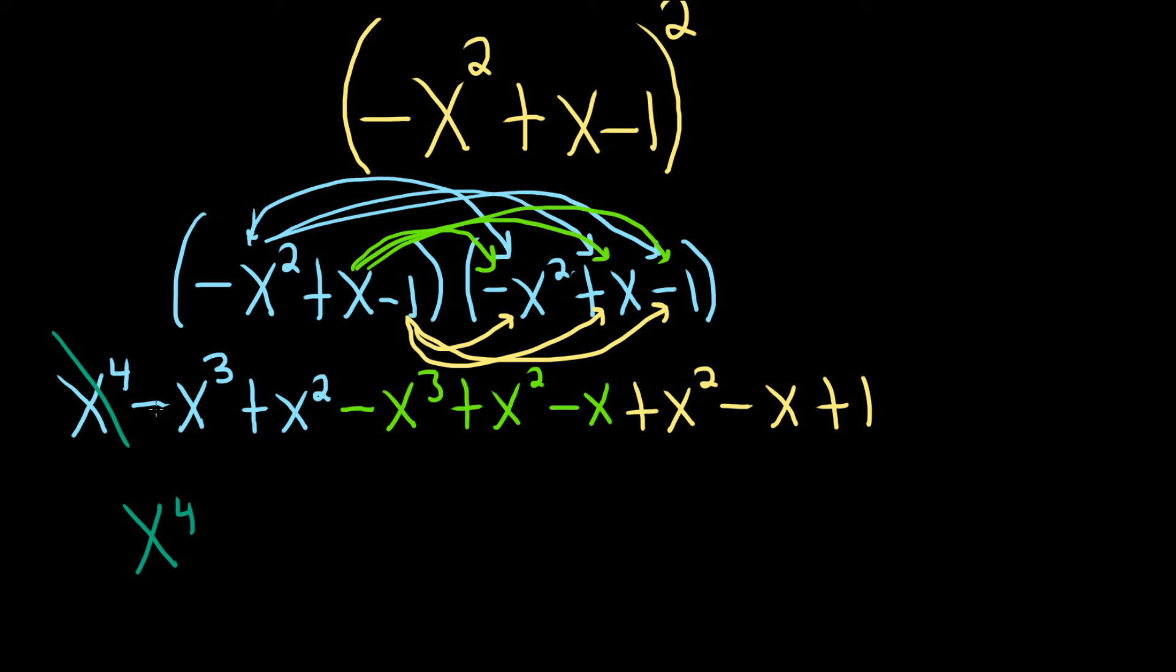So I'm going to cross them out so I know not to reuse them. So x cubed and x cubed, there's negative 1, negative 1. That's going to give us negative 2x cubed.